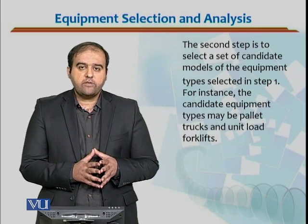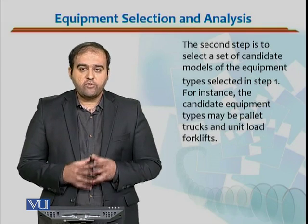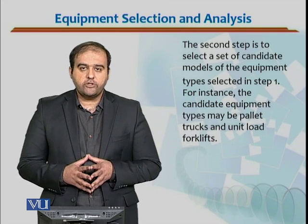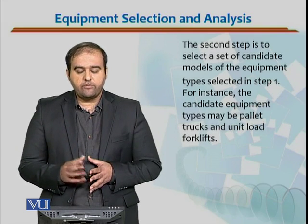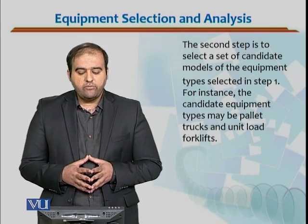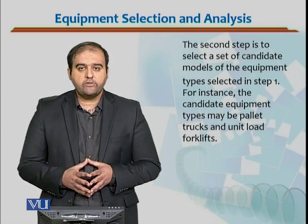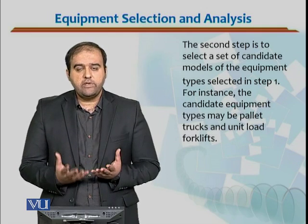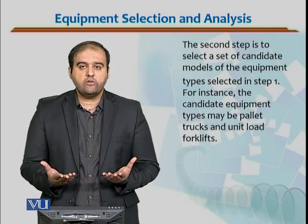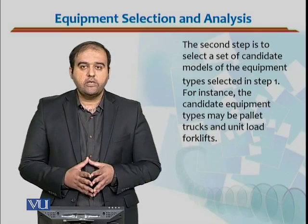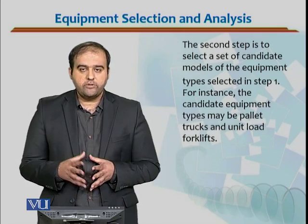So we have seen the first step, which was about the functionality of the equipment, and we have seen different criteria that represent the functionality requirements of the product. After determining the equipment based on functional requirements, we move to the second step: selecting a set of candidate models of the equipment. For instance, the candidate equipment types selected in step one may be a pallet truck or a unit load forklift.